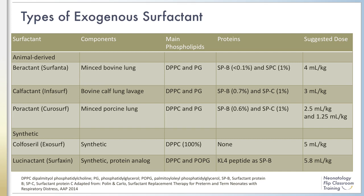Exogenous surfactant has been available as a treatment for RDS since 1990. The use of exogenous surfactant decreases RDS complications such as pneumothorax and RDS-associated mortality by up to 65% and 40% respectively.